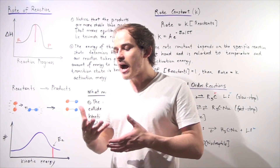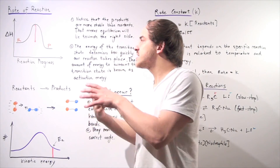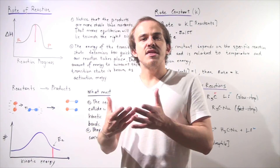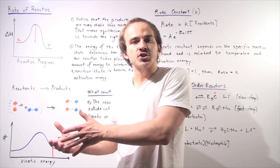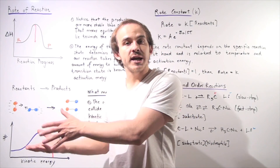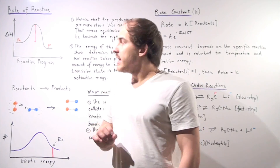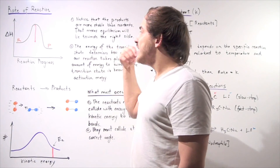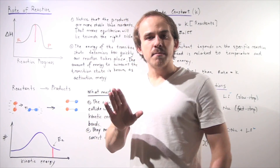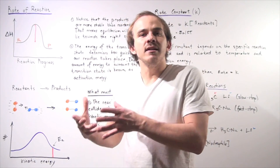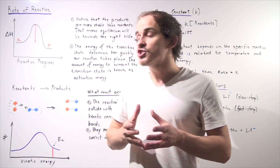A lot of the times we say because something is more stable, that means our reaction occurs at a quicker rate. That's actually not true. Equilibrium basically talks about the stability of our products versus our reactants.